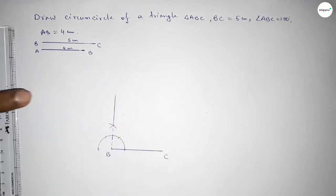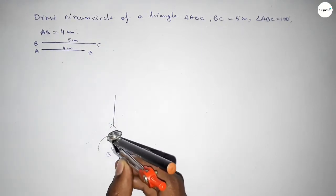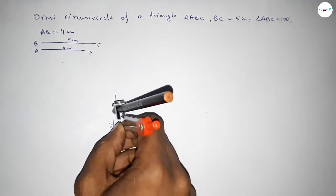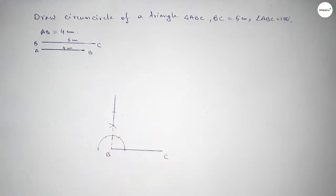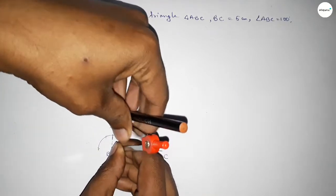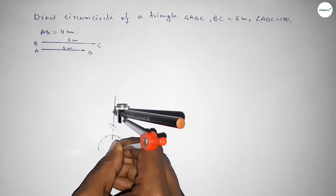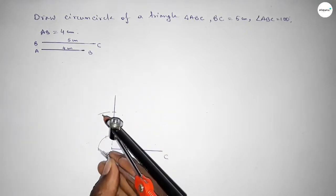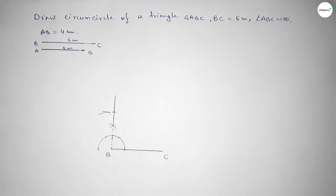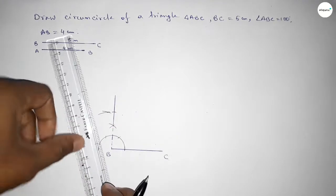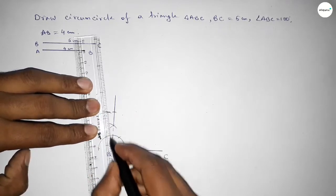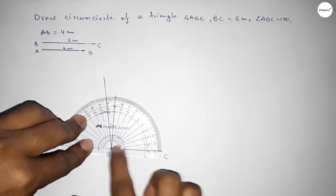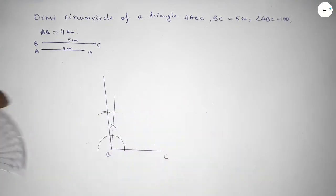Drawing a 90 degree reference first. Taking the same length and cutting here. Next, taking the distance from this point to this, then drawing an arc with the same length and cutting here so both curves intersect at a point. Joining to get the 100 degree angle — checking and confirming it is perfectly 100 degrees.